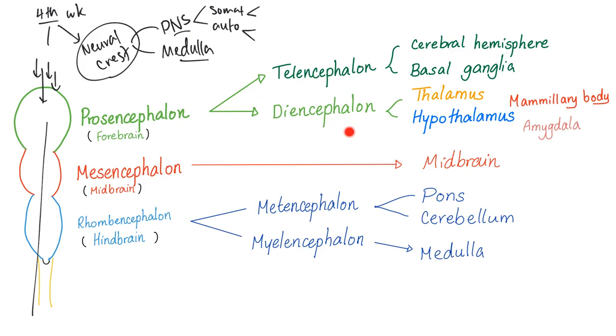Let's talk about the prosencephalon, also as your forebrain. It will give us two sub-parts, the telencephalon and the diencephalon. The telencephalon is the cerebral hemisphere and the basal ganglia. Cerebral hemisphere is responsible for everything, your thinking, your cognition, motor, sensory, all of this.